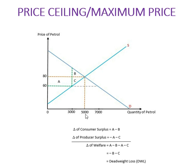This equilibrium price and quantity are shown by the red dotted line. This triangle here is our initial consumer surplus, and this triangle here is our initial producer surplus. Now let's say the government imposes a price ceiling at 60.